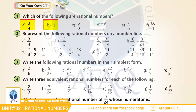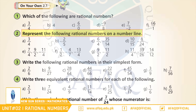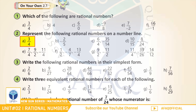اگلے سوال آپ نے خود حل کرنے ہیں. Question 2: Represent the following rational numbers on a number line. A: 3 by 4. Good. 3 by 4، 0 اور 1 کے درمیان میں آئے گا.